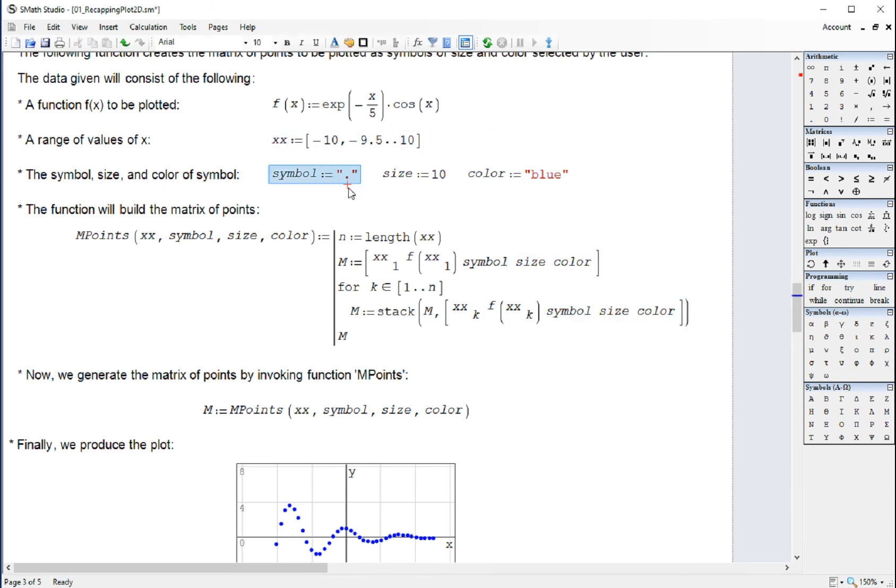And I'm going to create variables called symbol, size, and color. And then I have a little function here called endpoints for matrix points. We're going to enter the range of values of X, the symbol that we use, the size, and the color.